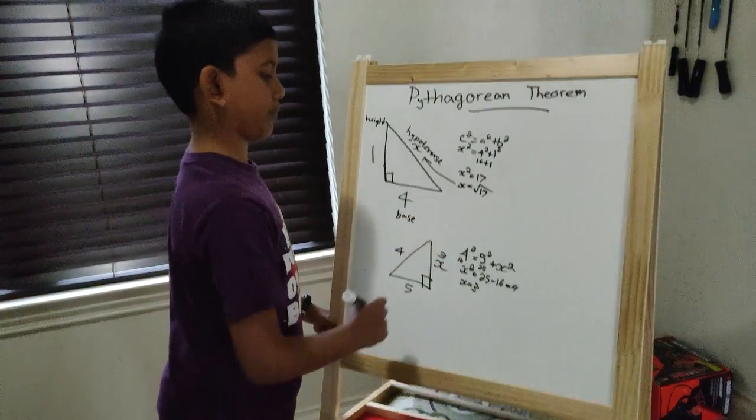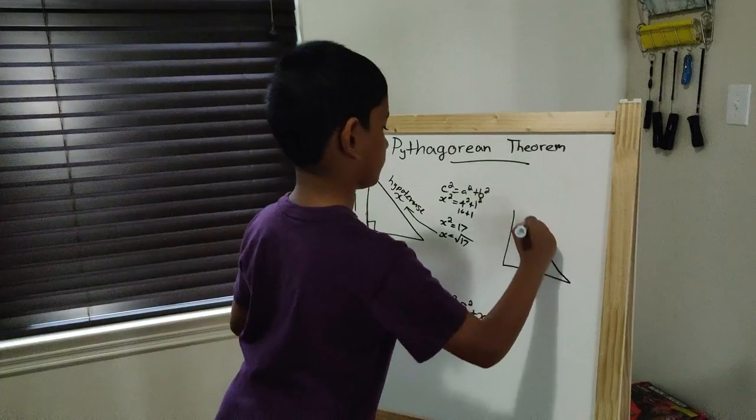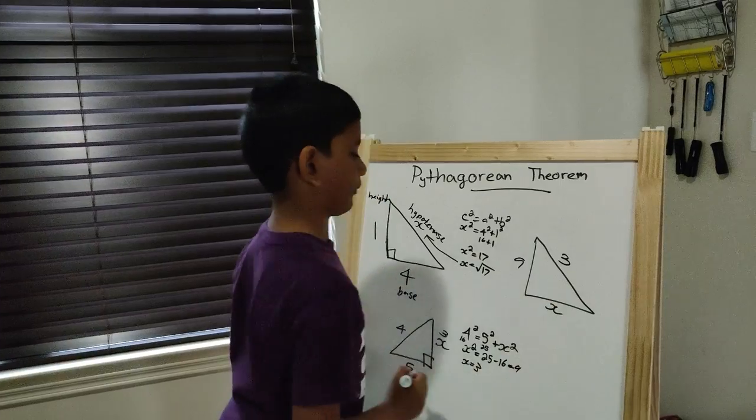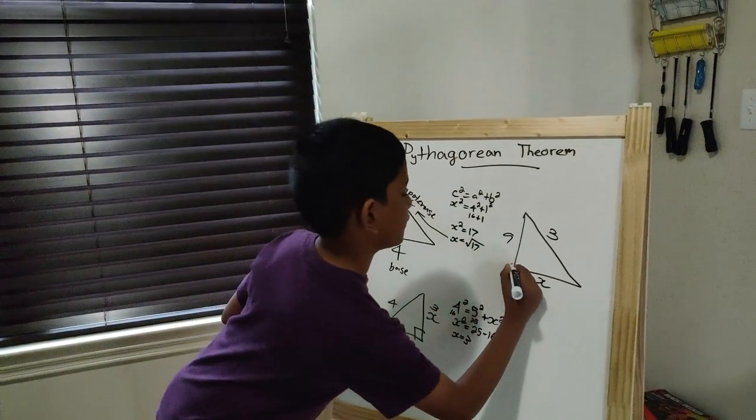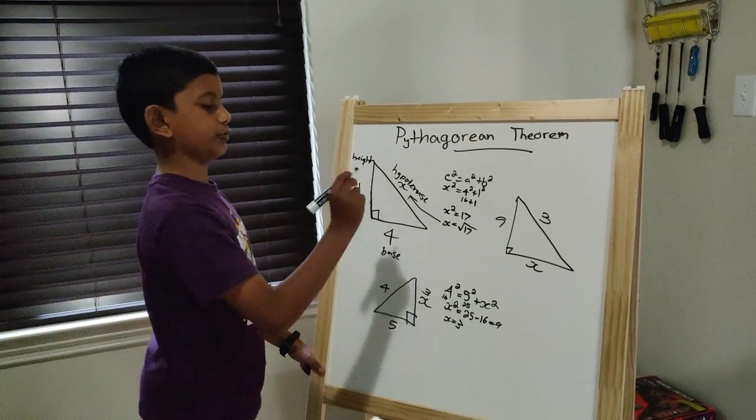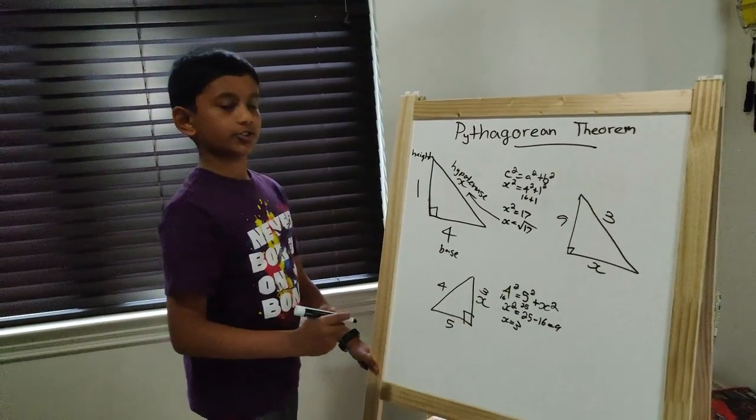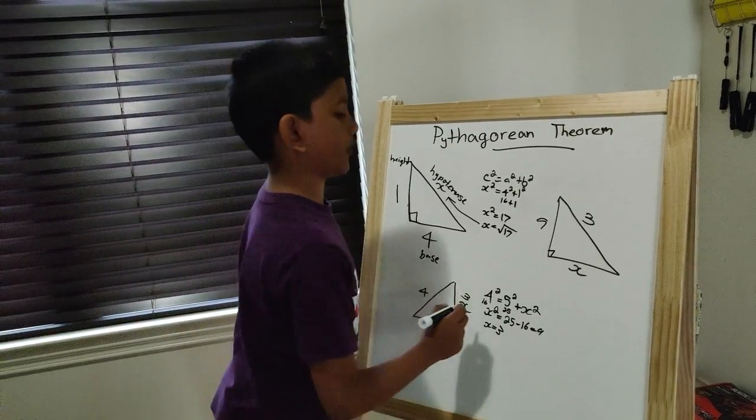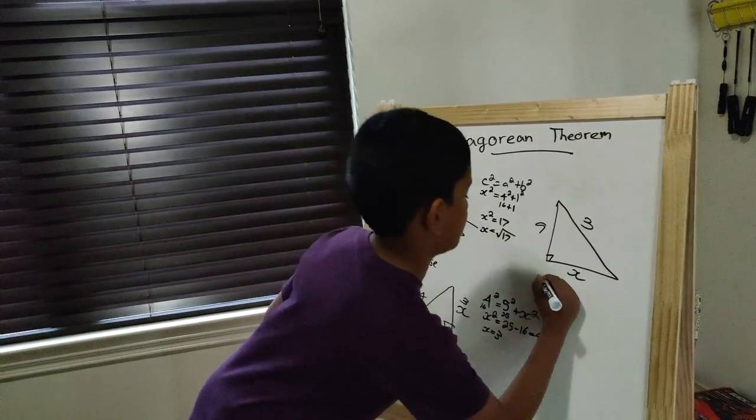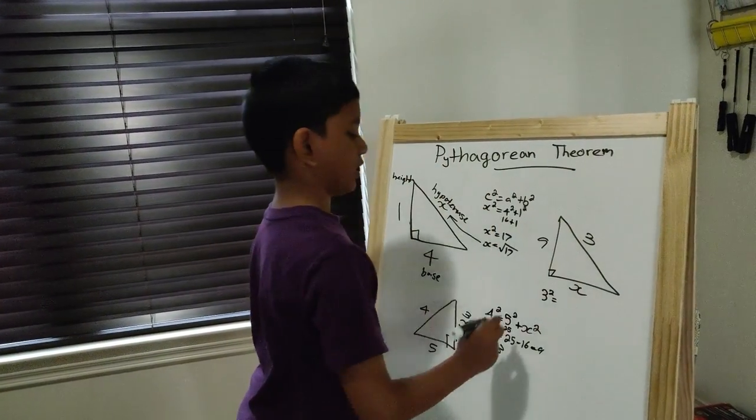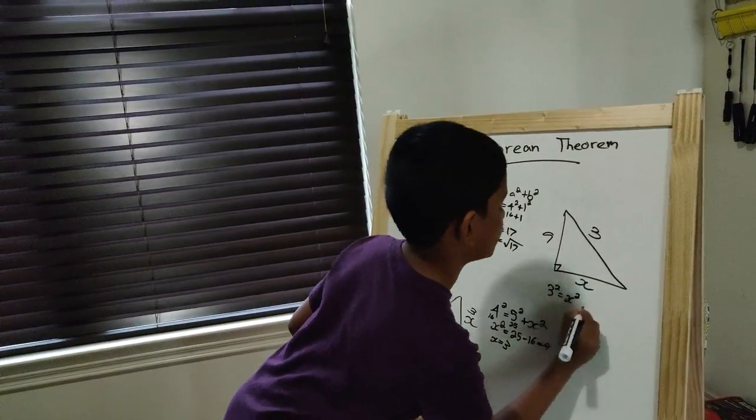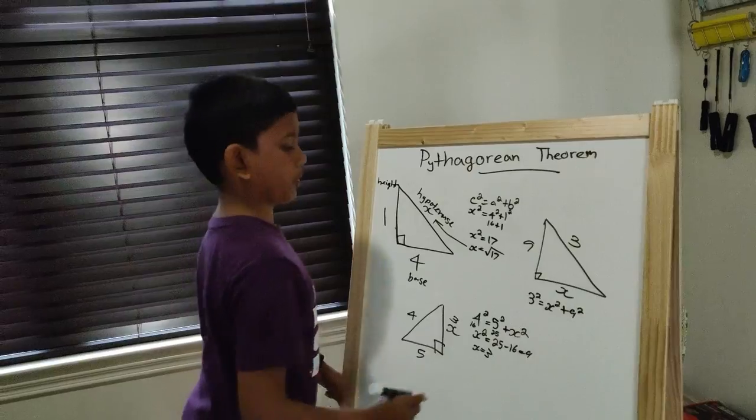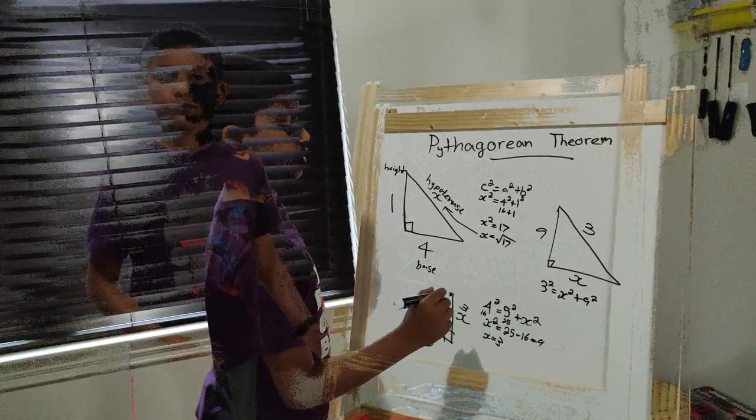Now, let's try one more example. You don't know the base. You know the height and you know the hypotenuse. So you use the same formula: c² = a² + b². So 3 is the hypotenuse, 3² equals x² the base, plus 9² the height. You only want to find the base, which is x².